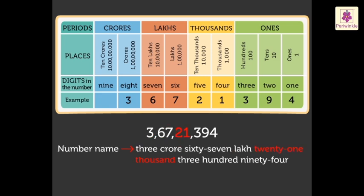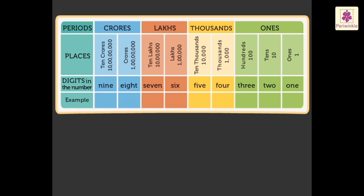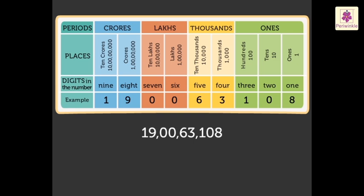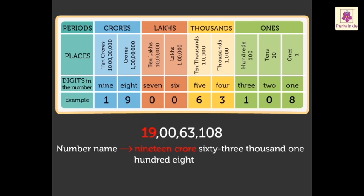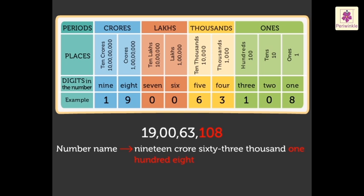It is read as three crore sixty seven lakh twenty one thousand three hundred ninety four. Let us try one more example. Did you notice? Here, we did not read the zeros, but we did write them to show the place value.